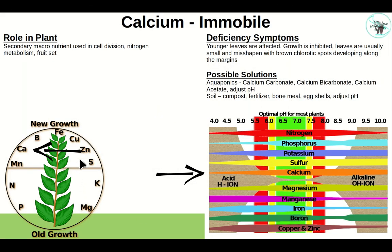Calcium is immobile — a secondary nutrient used in cell division, nitrogen metabolism, and fruit set. It shows up in younger leaves first. Growth is inhibited; leaves are unusually small, misshapen, with brown spots developing along the margins. Possible solutions in aquaponics: calcium carbonate, calcium bicarbonate, calcium acetate, and adjust pH. In soil: compost, fertilizer, bone meal, eggshells, and adjust pH. Anything below pH 6.4 reduces calcium availability.